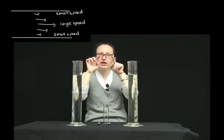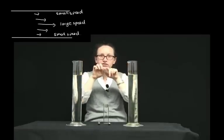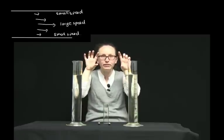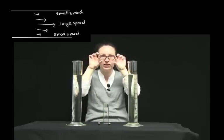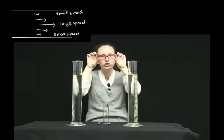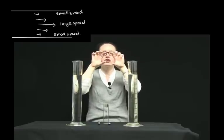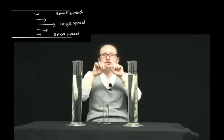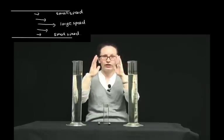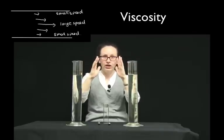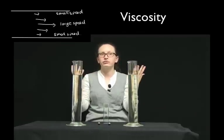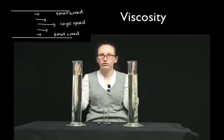As we get closer and closer to the centre of the pipe, instead of being next to the pipe which is absolutely stationary, the fluid in the middle is next to other fluid which is flowing slowly, and so the fluid in the middle actually flows a little bit faster than the fluids on the outside. This is caused by the viscosity or the internal friction of the fluid.